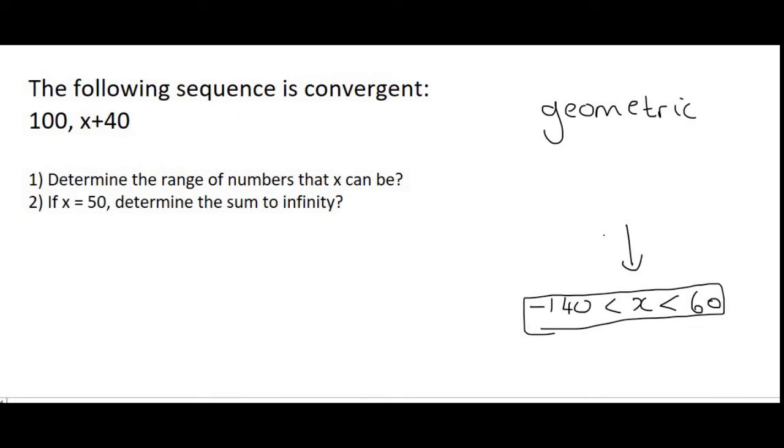Number 2 says if x is 50 determine the sum to infinity. Well if x is 50 then your first term is 100 and your second term would be 50 plus 40 which is 90.